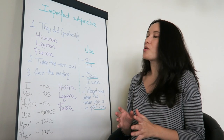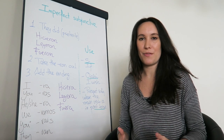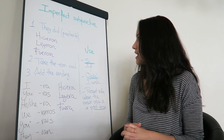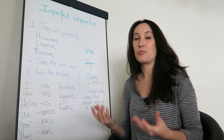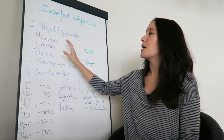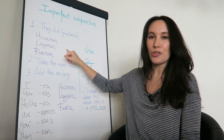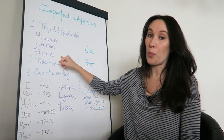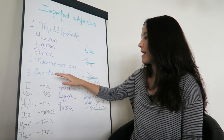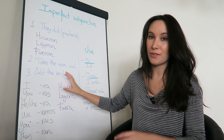So those are the cases or uses for imperfect subjunctive. Let's see how we create it now. To create it we need the preterite — we need the 'they did' form. For example: 'hicieron' — they did or they made; 'leyeron' — they read; 'fueron' — they went. Then I'm going to take that '-ron' ending out and add the endings for imperfect subjunctive.